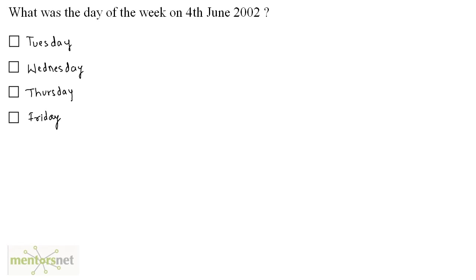What was the day of the week on 4th June 2002? So the number of odd days till this date 4th June 2002 will be the number of odd days till 2001 plus the rest of the number of days. So this will be the January of 2002, then February of 2002, then March, April, May and we have June. Let us keep this blank, 2001, we will calculate that later.